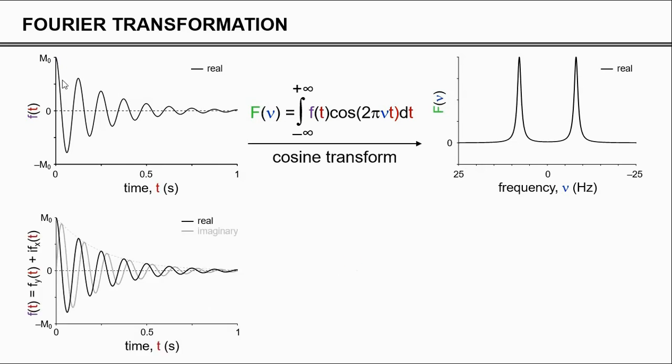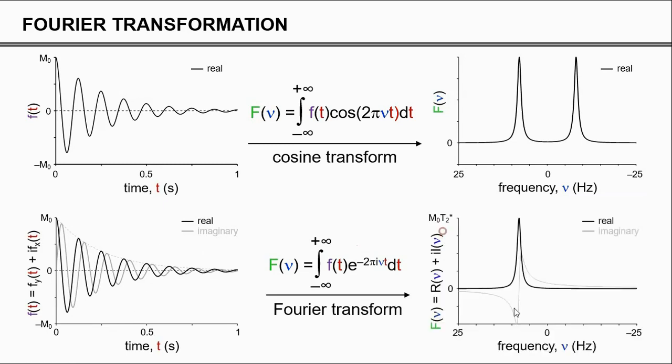With NMR, we have not a real signal, but we have a complex valued signal, where we have one component, the real component, measured along one axis, and the imaginary component along the other orthogonal axis. As a result, we cannot use the cosine transformation anymore. We have to use the Fourier transformation. The Fourier transformation works exactly the same way as the cosine transform, with the exception that it works on complex valued data. We have a complex valued FID. Therefore, the spectrum will also be a complex entity, in which we have a real spectrum, in black, and an imaginary spectrum, in grey. On most spectrometers, you only display the real spectrum.